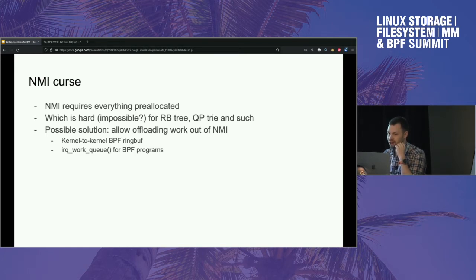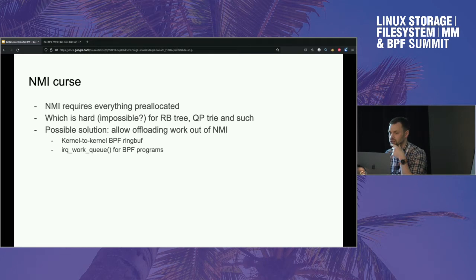It doesn't seem like we can realistically pre-allocate for arbitrary QP trie usage without hitting limits, because we didn't anticipate some patterns. One suggestion was having a cache of pre-allocated objects — maybe cache a set of pre-allocated entries rather than the entire structure. But how much do you cache? You make up some number, it will work with some workloads and not with others.